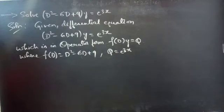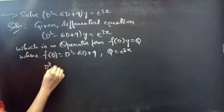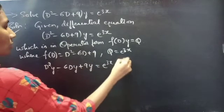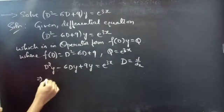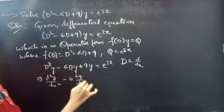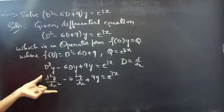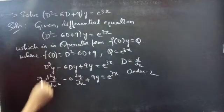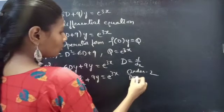Now let's find the order and degree of the given equation. We can write the given equation as D²y - 6Dy + 9y = e^(3x). We know we can write the differential operator D as d/dx. Then we get d²y/dx² - 6 dy/dx + 9y = e^(3x). The highest derivative is d²y/dx², so the order is 2. The highest power of the highest derivative is the degree, so the degree is 1.